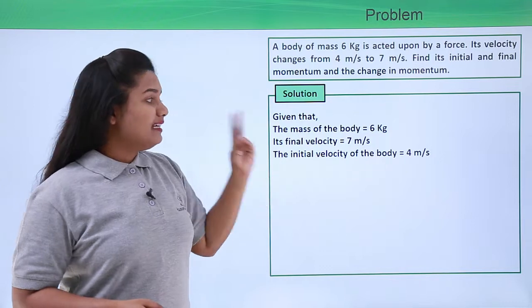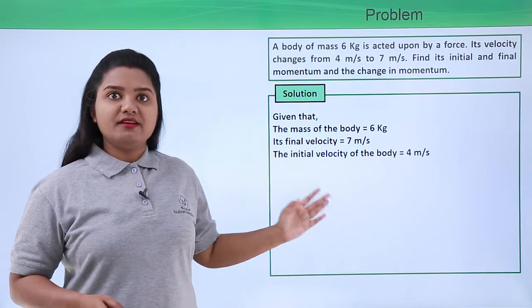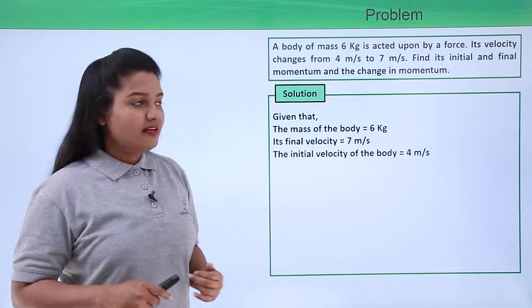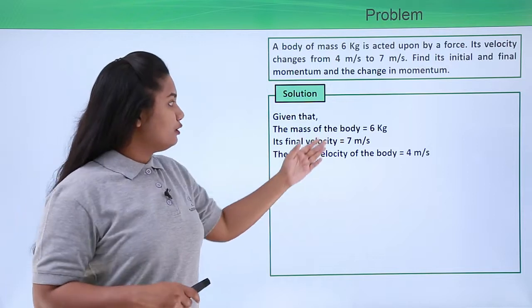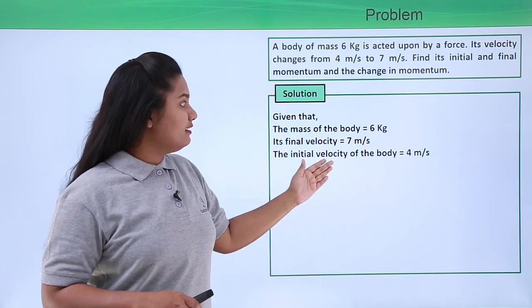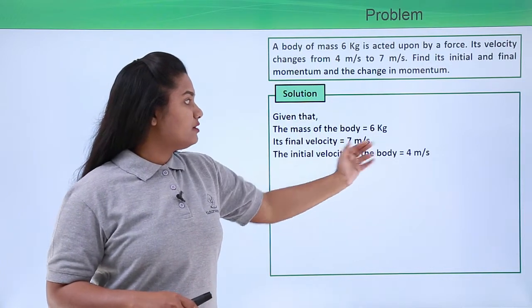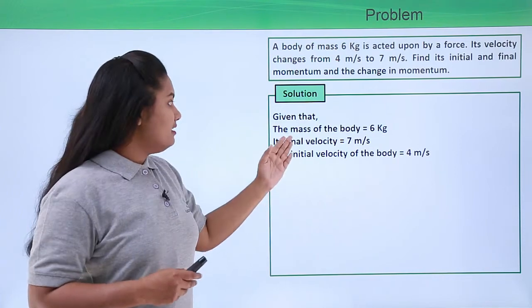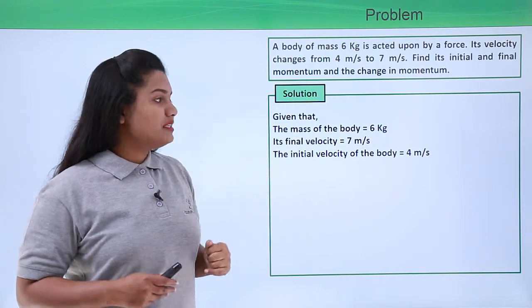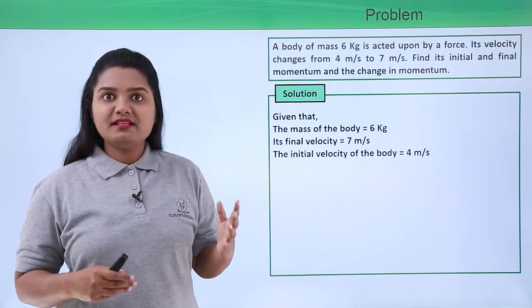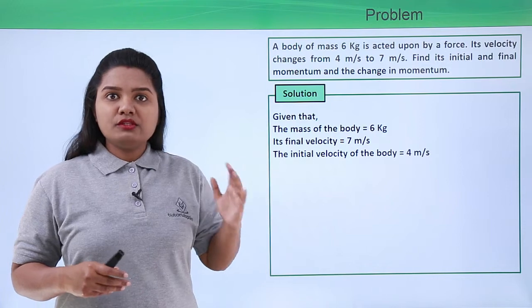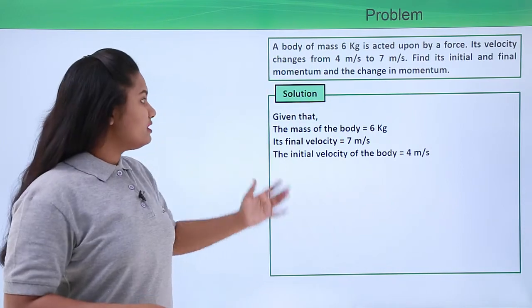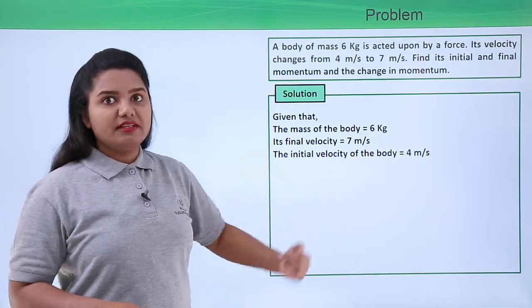The second thing we need to do is check whether all these values are in SI units. The mass is given in kg, which is SI unit. The initial and final velocities are given in meters per second, which are also SI units. So we can proceed to solving this problem.